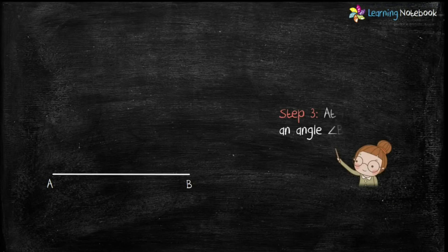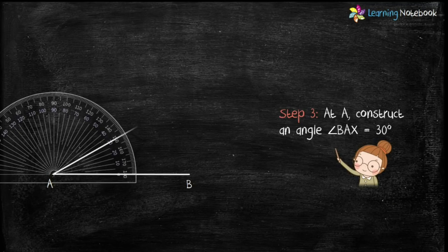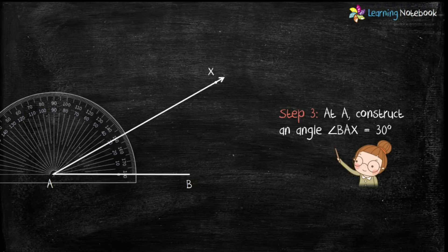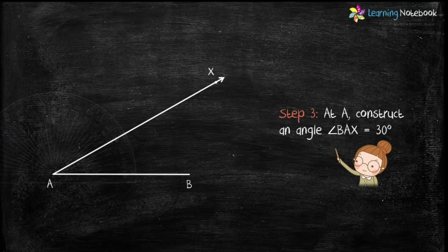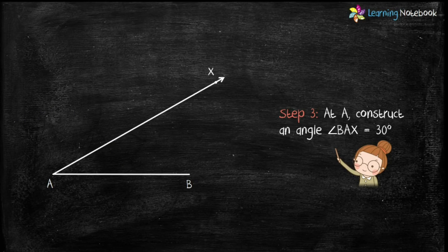Now, in step 3, at A, construct an angle BAX equals to 30 degree with the help of a protractor.